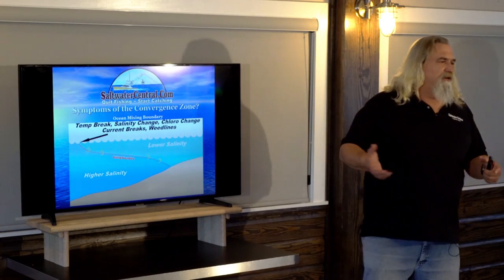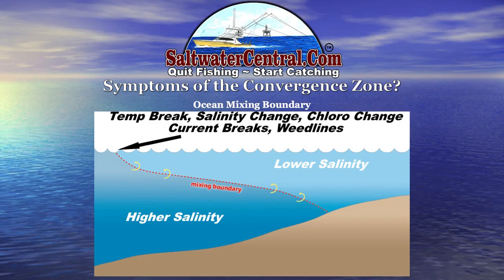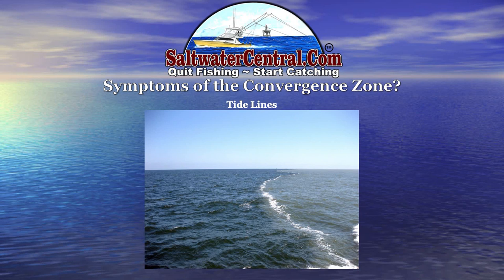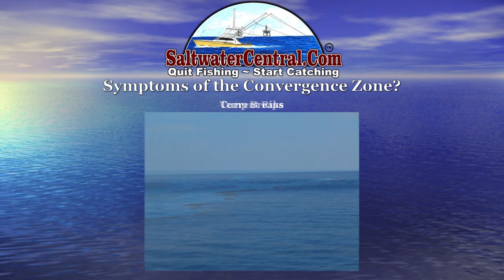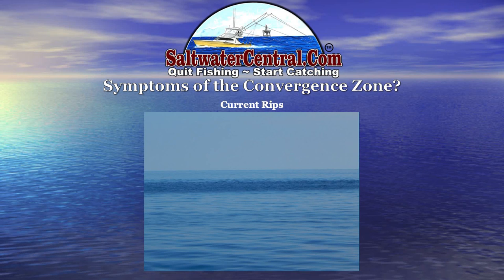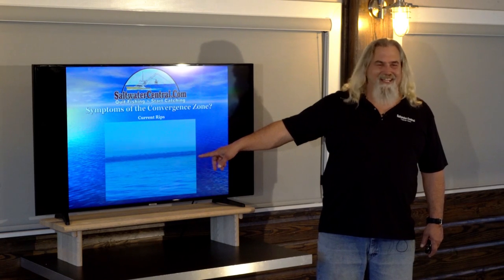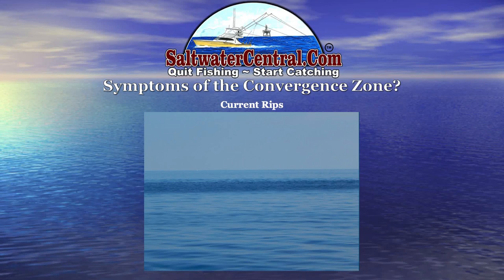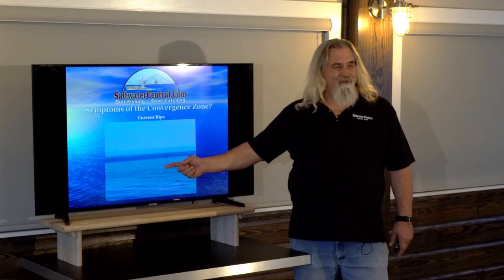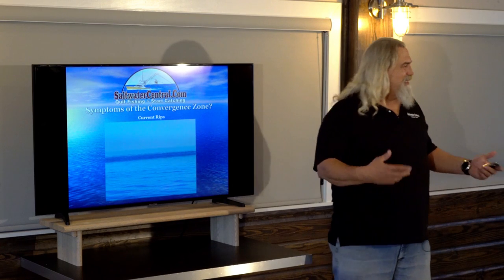What are the symptoms of a convergence zone? Convergence zones are formed around mixing boundaries — basically where one body of water hits another one. Those things can be tidelines, temperature breaks, or current rips. Here's a shot of a current rip down at the Steeples — the fishing was just outstanding. This offshore side had nothing, but this side right here was where it was all at. Same sort of deal with the convergence zone.